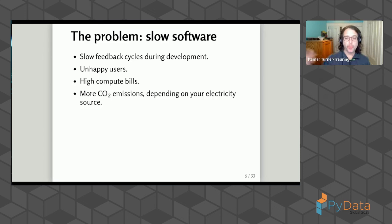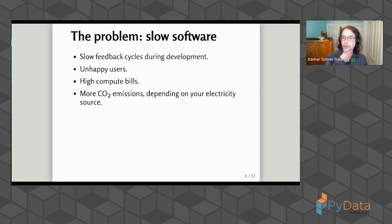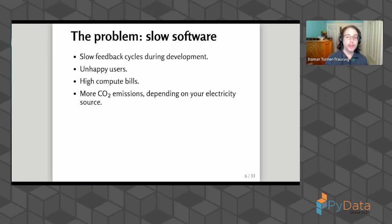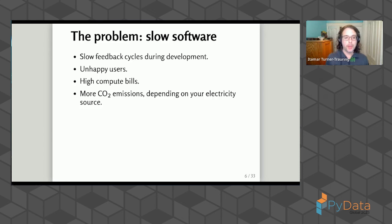If you get down from one hour to five minutes, you can do things much faster. If you have users using your code once it's in production and they're waiting for responses, if the software takes too long, they will be unhappy. The faster it is, probably the happier they'll be in most situations. In general, people are happier when they get results back faster.